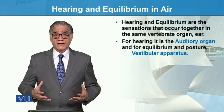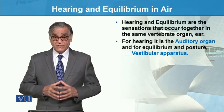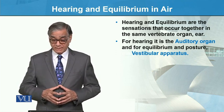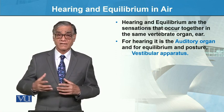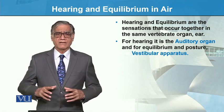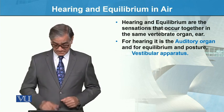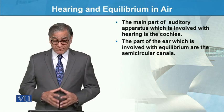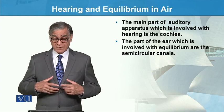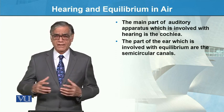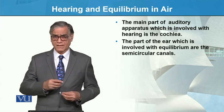The ear can be divided into two functional parts: the auditory apparatus, for hearing, and the vestibular apparatus, which controls equilibrium and posture. The main part of the auditory apparatus involved with hearing is the cochlea — the anatomy we have already read — located in the middle ear, which we can see in the next slide.